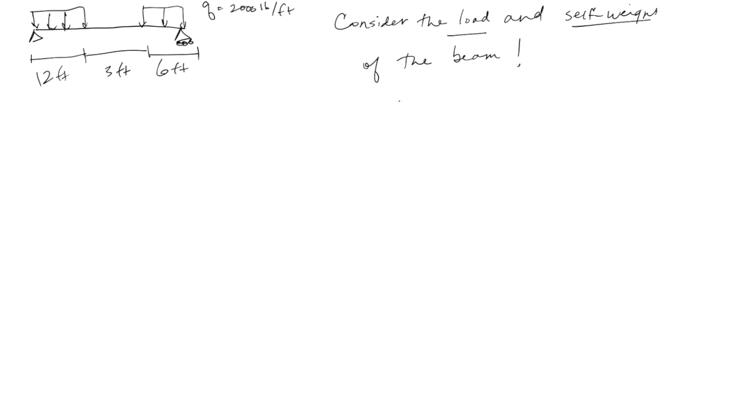So we want to consider both of those. Let's assume that sigma allowable is 18,000 psi. And we want to select a wide flange I-beam using the section modulus S. So that's all tabulated in the appendix in the book. So the first thing we're going to do is we're going to neglect self-weight. So we're neglecting self-weight, we're going to determine m max.